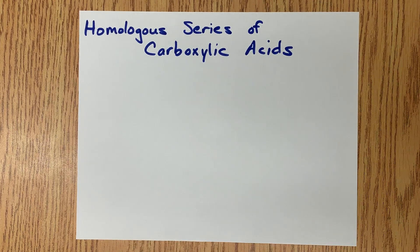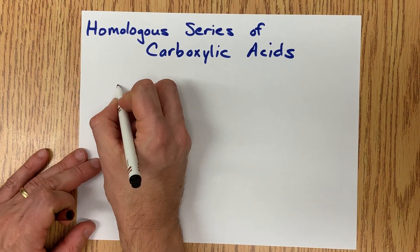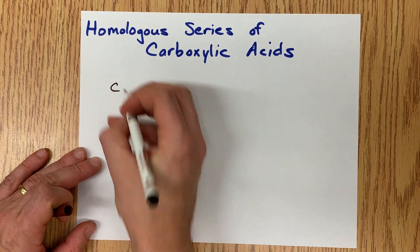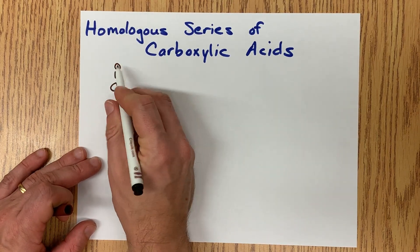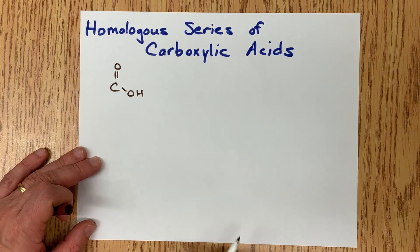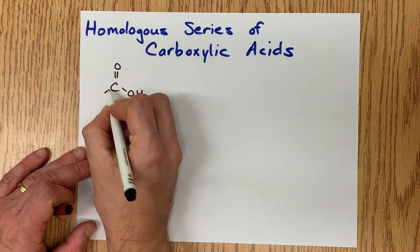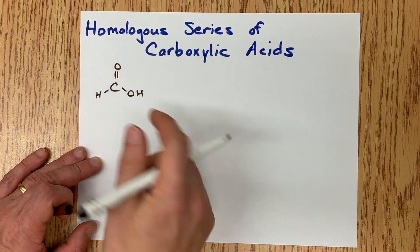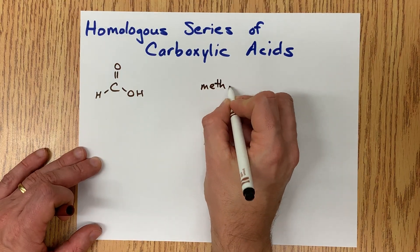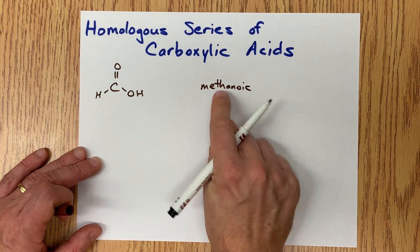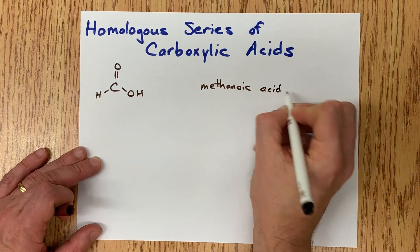The homologous series of carboxylic acids begins with a one-carbon chain that has the carboxylic acid functional group — that's a double-bonded O and an OH. That's only one carbon long, and each carbon needs four bonds, so put the hydrogen there. This is called methanoic acid: a one-carbon chain that is a carboxylic acid.